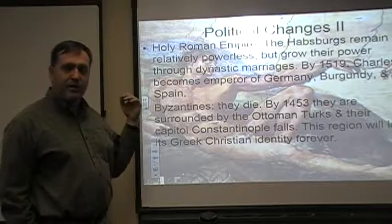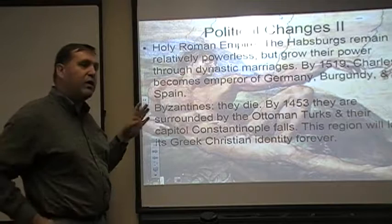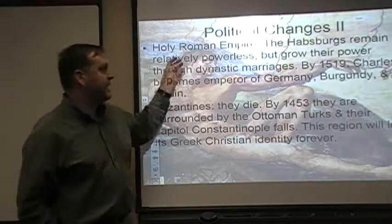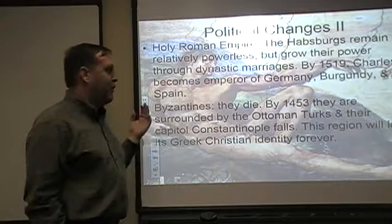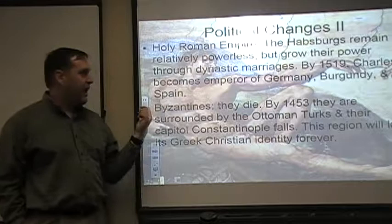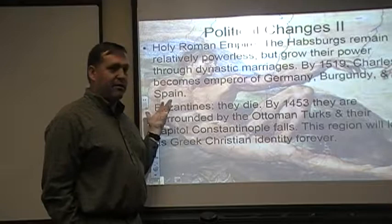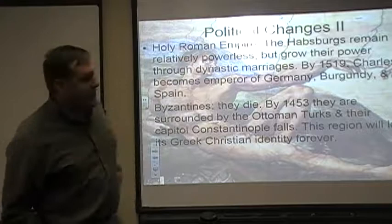In terms of the Holy Roman Empire, the Habsburgs maintain their situation but remain relatively powerless — in charge but unable to do much because local princes maintain control. However, their power grows around the world through dynastic marriages — they marry the right people at the right time. By 1519, Charles was emperor of Germany, Burgundy, and Spain, and by 1521 with Cortés' conquest of Mexico, this one man had essentially controlled a quarter of the earth just by being married to the right people.